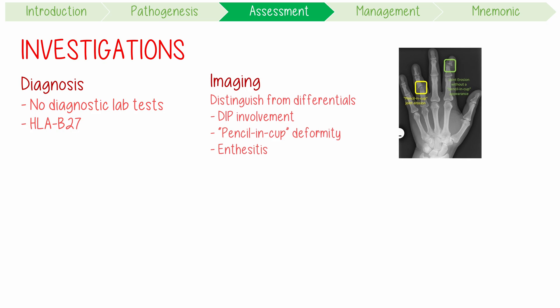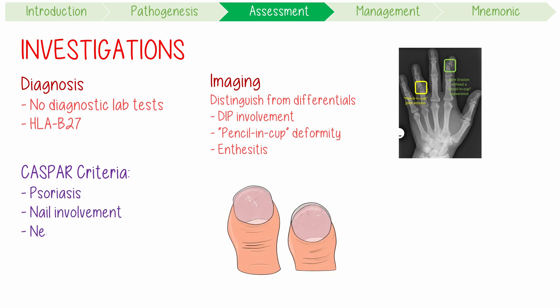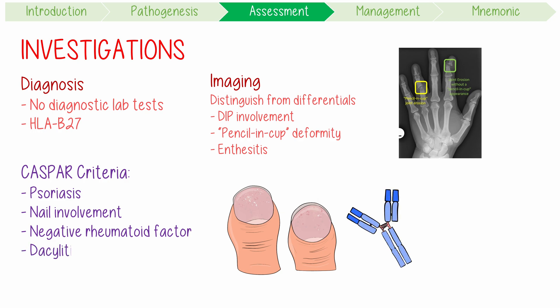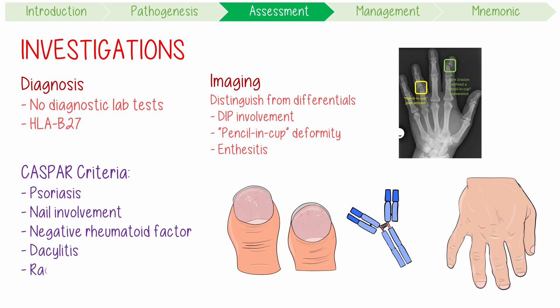Diagnosis requires meeting the CASPAR criteria, with three of the following five features: psoriasis, nail involvement, a negative rheumatoid factor on bloods, dactylitis, and radiographic evidence of disease.